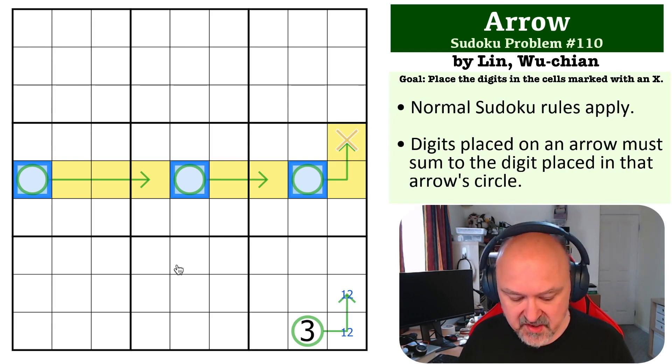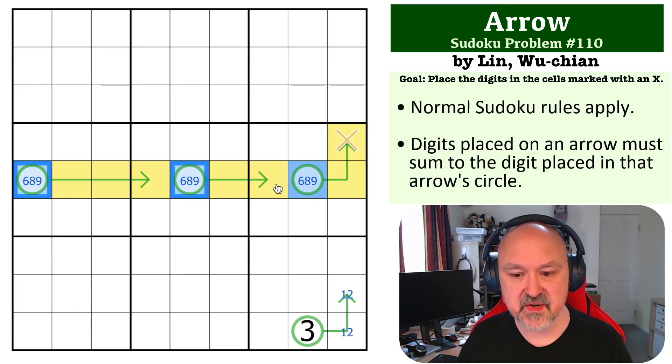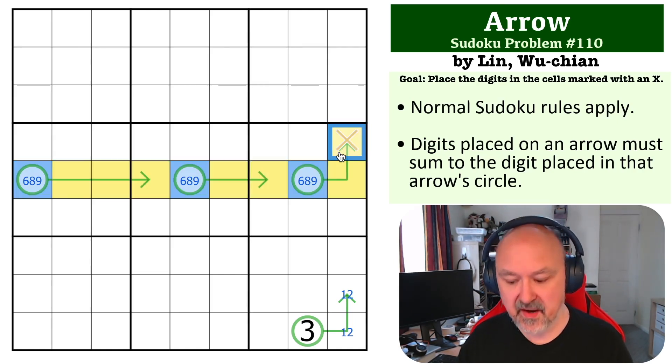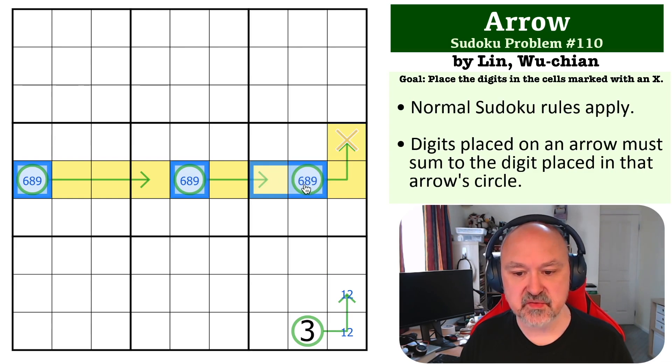So let's look at 23. 23 would be made with 6, 8, and 9. And if these sum to 23, then we know that the entire sum of this would be 46. But we know that this would be 45, because the row must sum to 45, and this would have to be a 1. But if this is a 1, this 1, 2 here is broken. So that doesn't work.